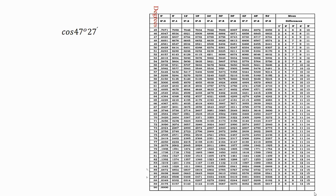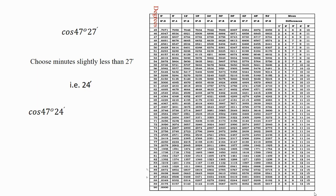Let's take one more example: cos(47°27'). As you can see, there is no column for 27 minutes in the given table. So what we have to do is choose the minutes slightly less than 27 minutes from the given table. We can observe that 24 minutes is slightly less than 27 minutes. So we write the angle as cos(47°24'). But our requirement is 27 minutes, so we need to add 3 minutes from the mean difference column to get the required angle cos(47°27').